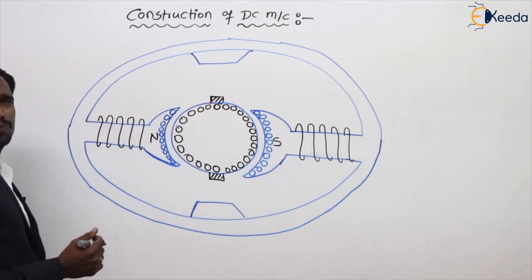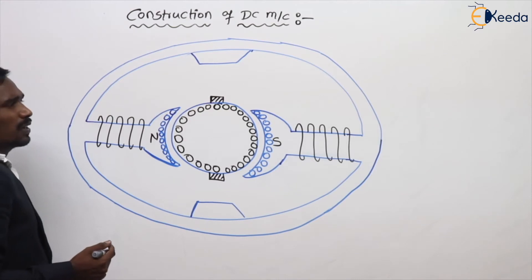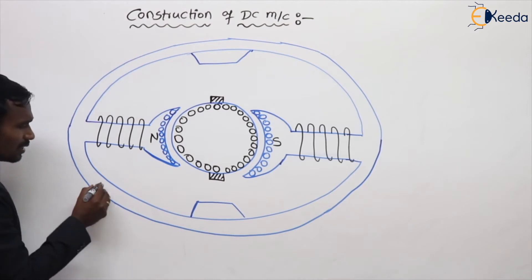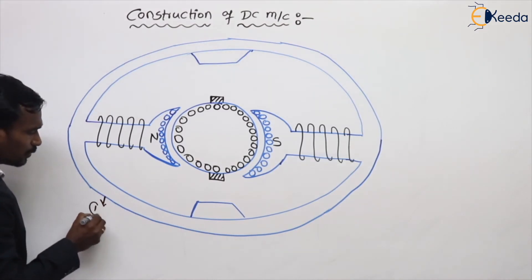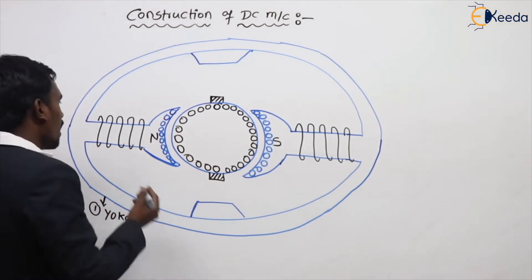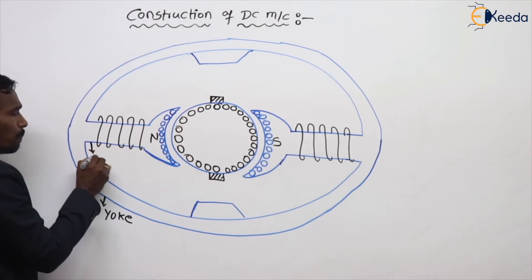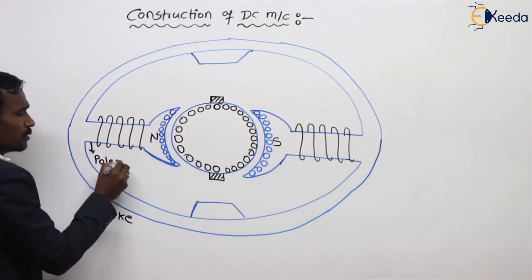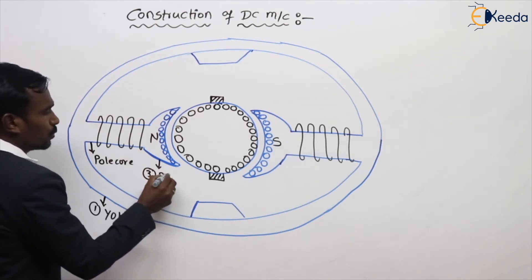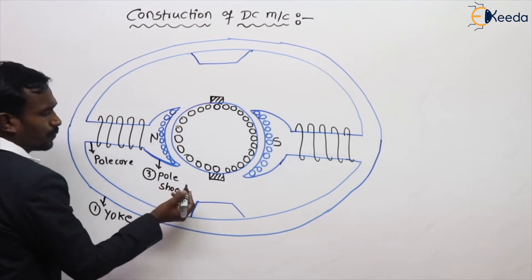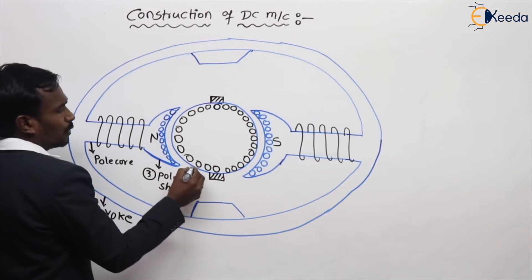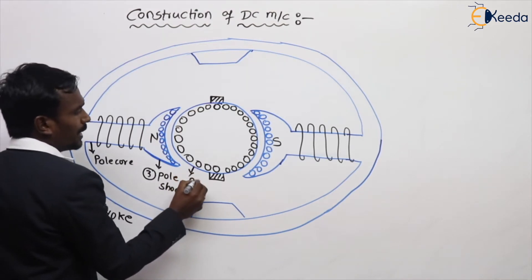This is the overview. Now I will list the parts of my machine. First, the yoke of my DC machine. Second, pole core. Third, pole shoe. Fourth, armature core. Fifth, field winding. Sixth, armature winding.